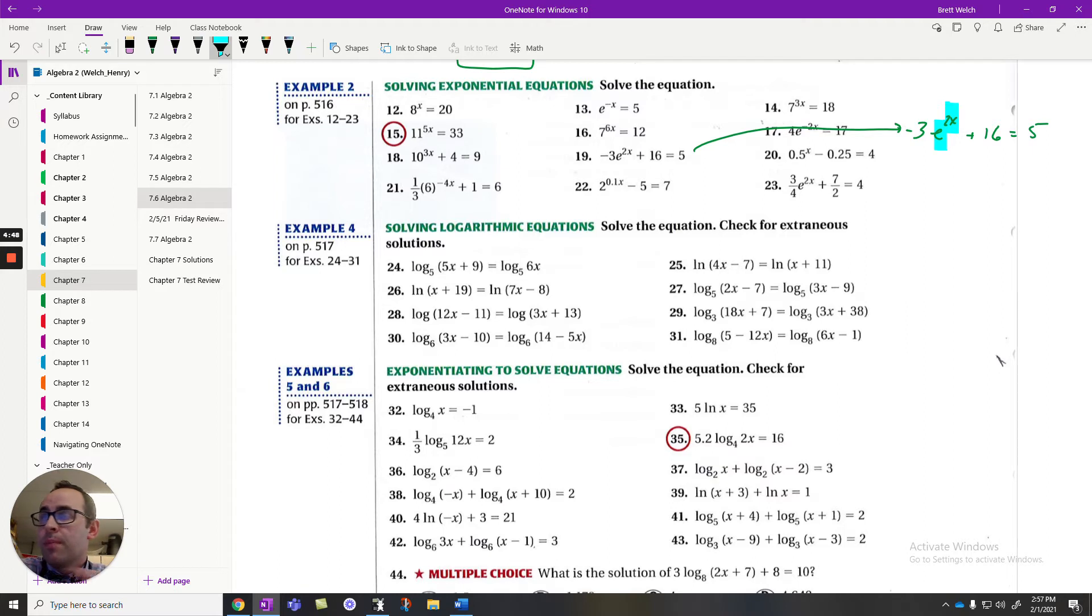That has to be completely alone before I can move forward. So I'm going to minus 16. I have negative 3e to the 2x equals negative 11. And I can divide by negative 3. And e to the 2x equals 11 over 3. The negatives cancel and I get 11 thirds. Now that's some sort of decimal, 3.6 repeating. It doesn't really matter right now.